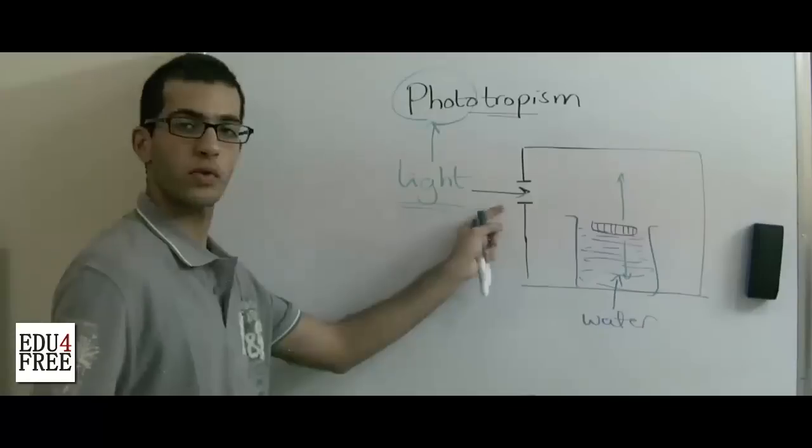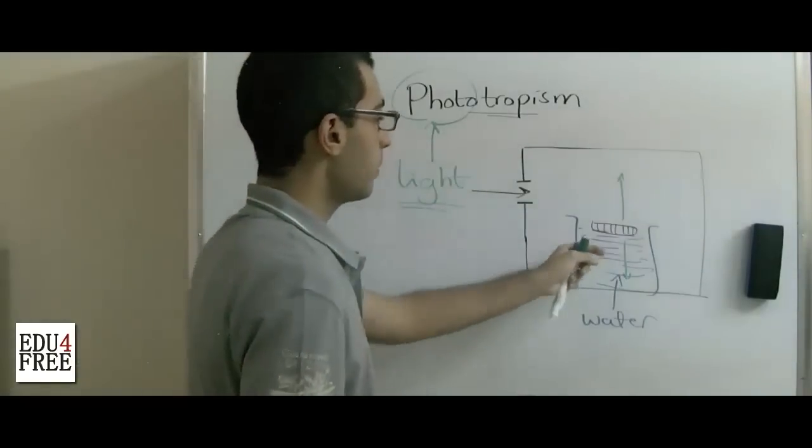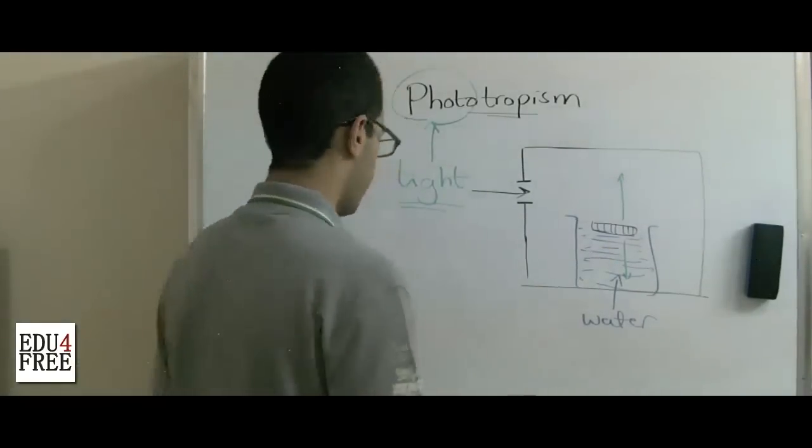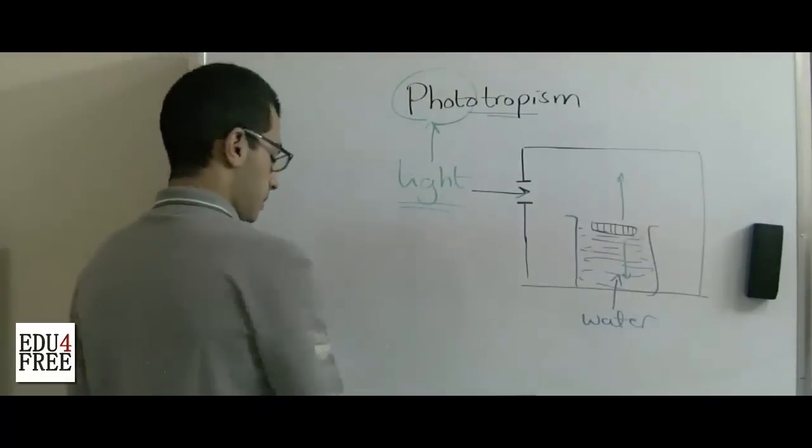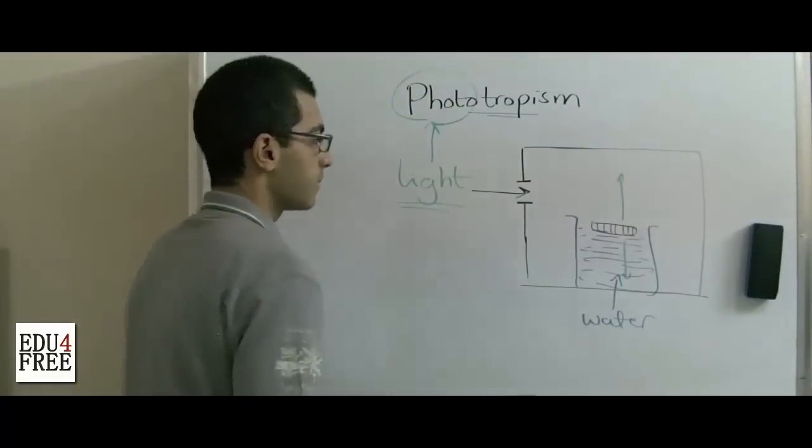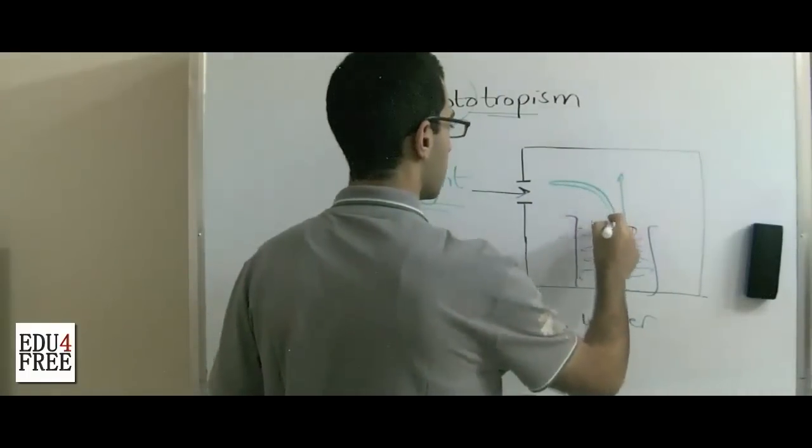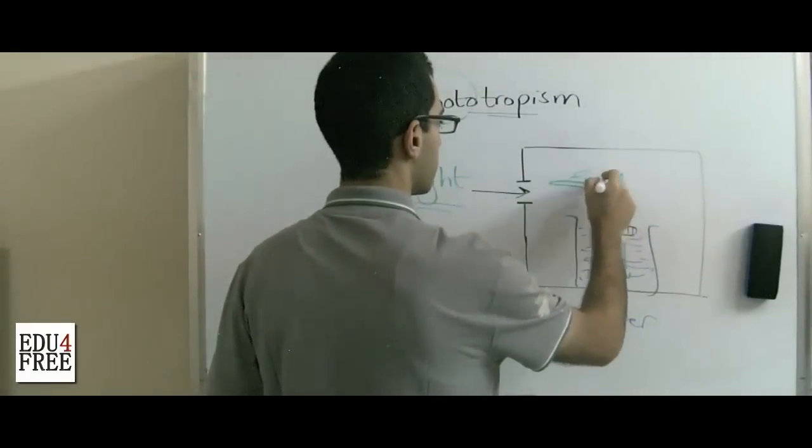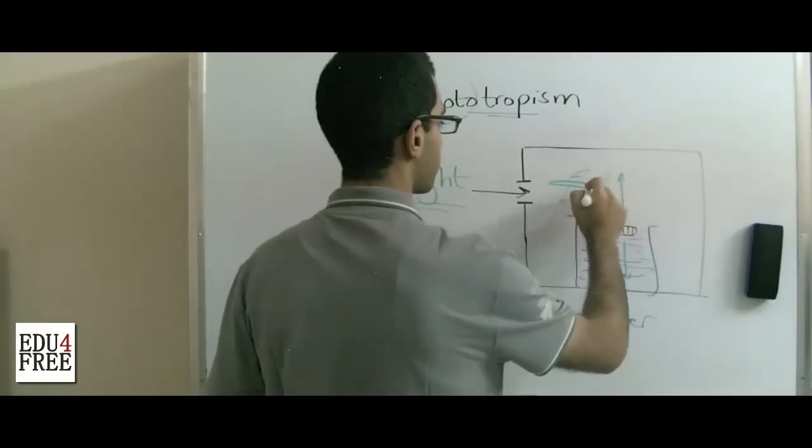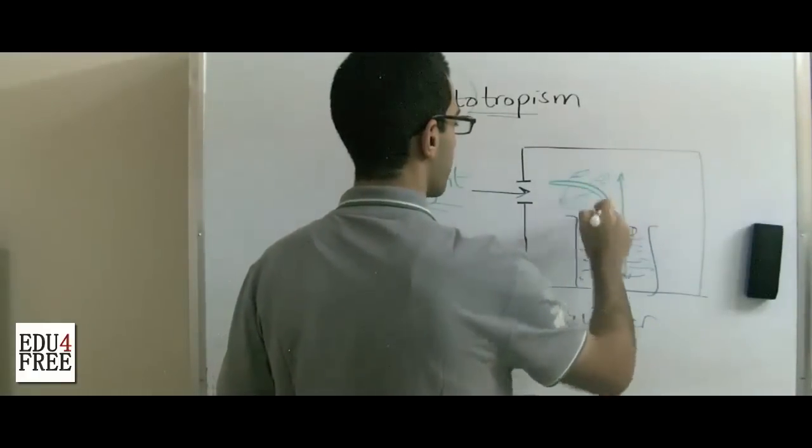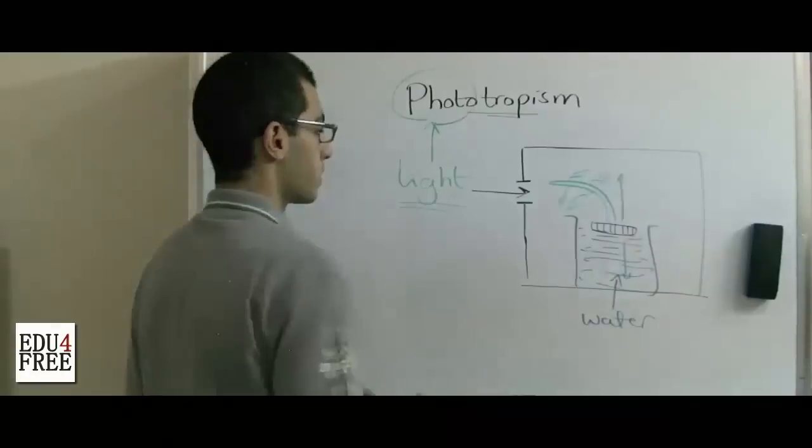This is the only source of light for the plant which grows in here. What happens is the stem of the plant grows so that it's curved towards the light.